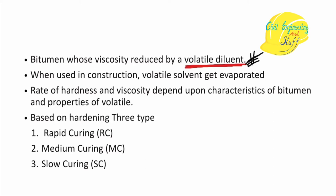With cutback bitumen, you have a combination of bitumen and volatile diluent. You just take the material, put it on the road, and spread it. As you spread it, the volatile solvent evaporates, and we get a thin layer of bitumen.